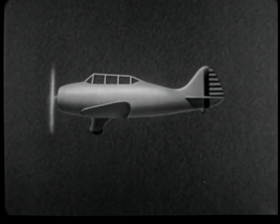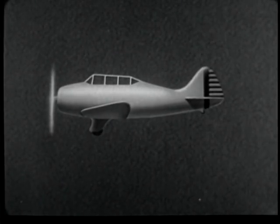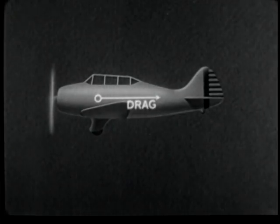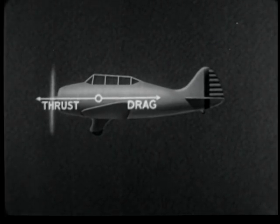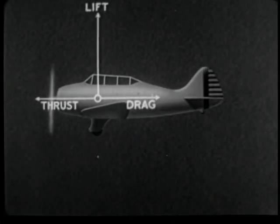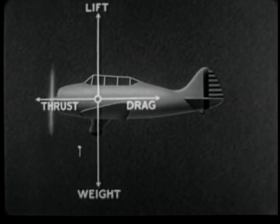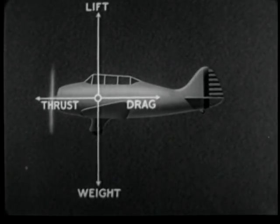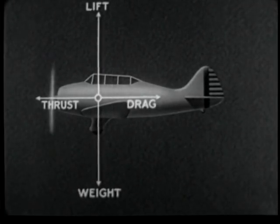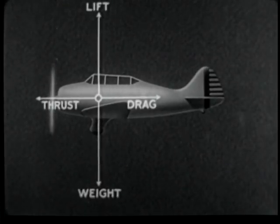When an airplane is flying horizontally at a constant velocity, the forces acting upon it are in equilibrium. The retarding force or drag equals the propelling force or thrust. The lift must equal the total weight of the airplane. Therefore, the lift and drag equations serve to determine how much weight an airfoil will lift under certain conditions and how much thrust horsepower is required to overcome the total drag of the airplane.